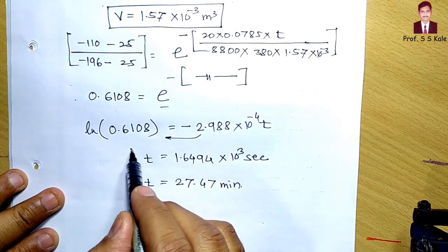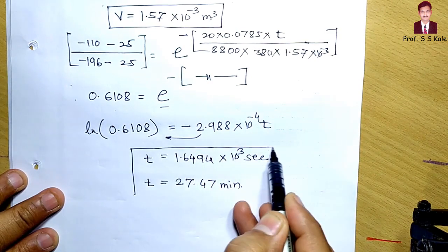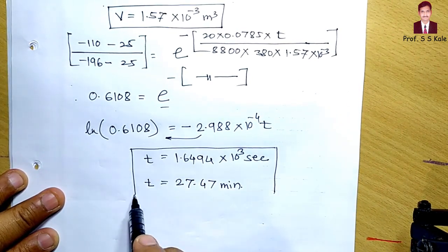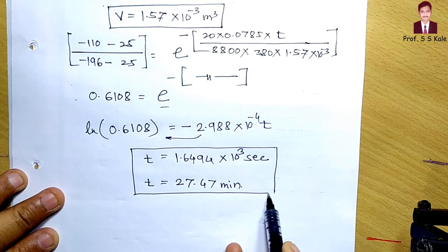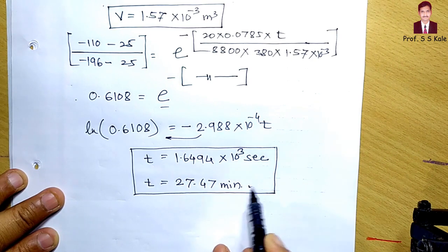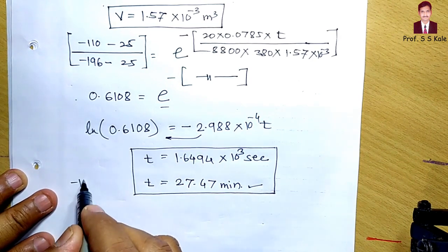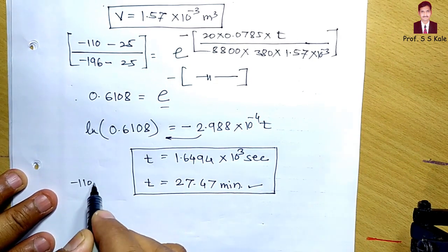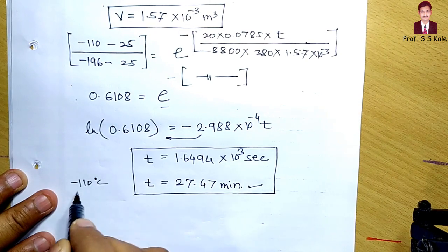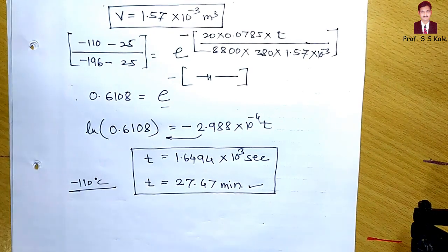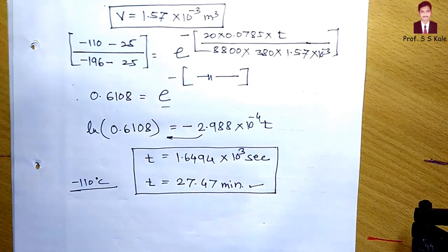That is the final answer. After passing approximately 1649 seconds — or 27.47 minutes — the temperature of the copper cylinder will become minus 110°C. Thank you very much.